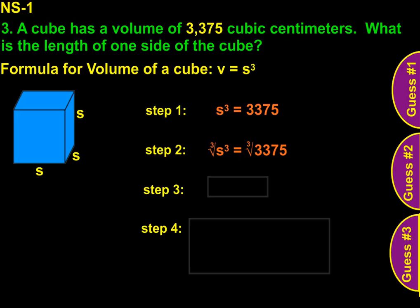Now, 3,375 is a pretty big number to wrap your head around. And it probably does not jump out at you immediately what number times itself three times would get you to that point. But let's work with some benchmarks that we do know.